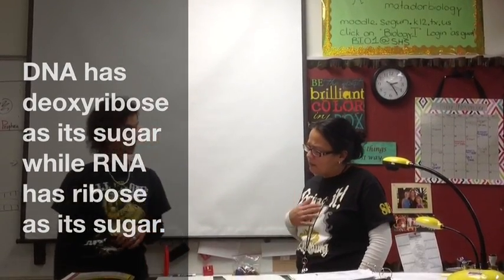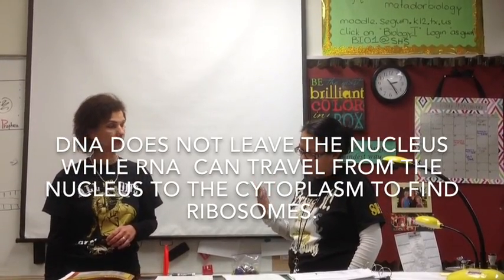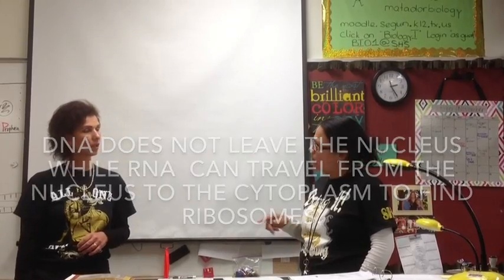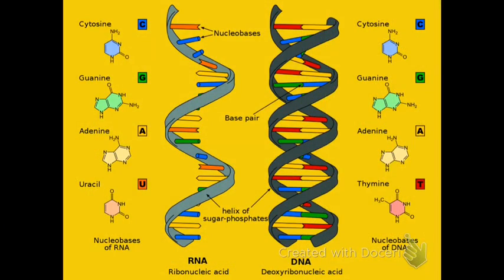Now I know how DNA gets its message out of the nucleus so that proteins can be made. This diagram compares RNA on the left with DNA on the right. Notice the single strand of RNA and the double strand of DNA. Both have sugar-phosphate backbones and are shaped like a helix. RNA bases are cytosine, guanine, adenine, and uracil; DNA bases are cytosine, guanine, adenine, and thymine. Notice the purines, which have a double ring, and the pyrimidines, which have a single ring.